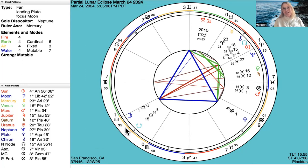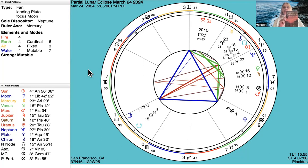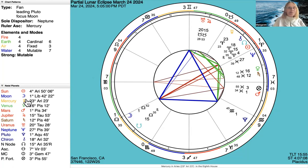Sorry about the lighting in here — maybe we should put a light on. I was going to actually read something from the Sabian symbols. The Sabian symbol for this is three degrees Libra. The lighting is terrible in here.